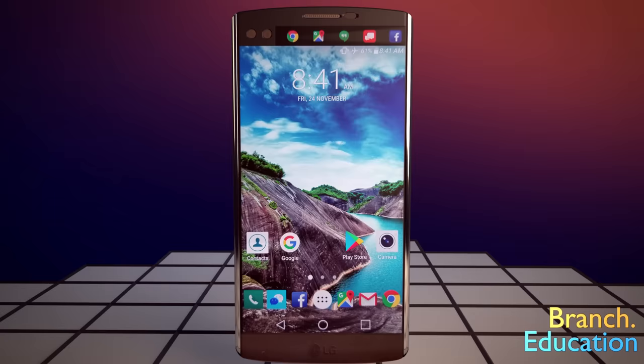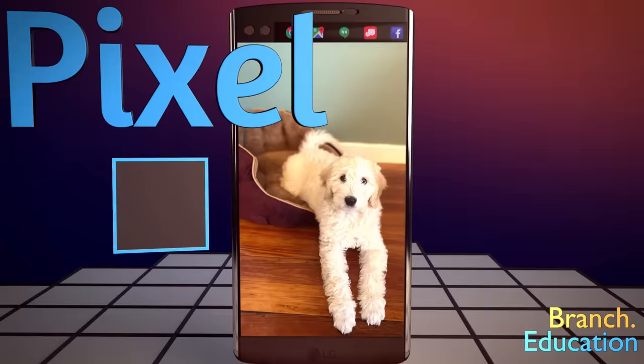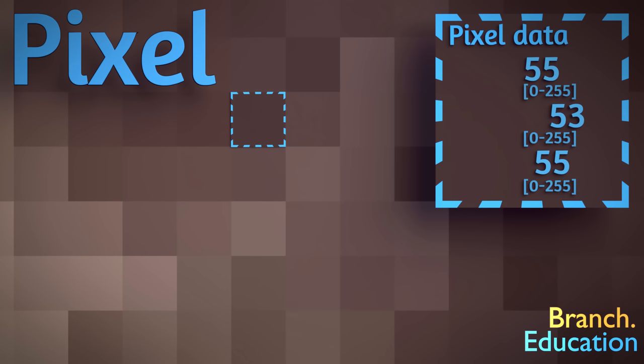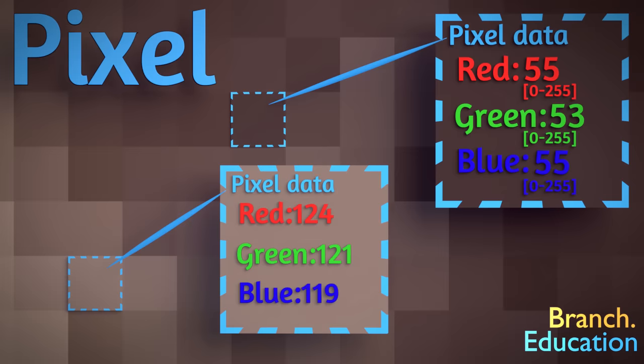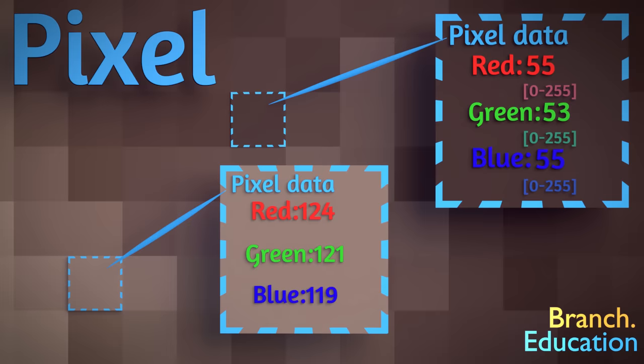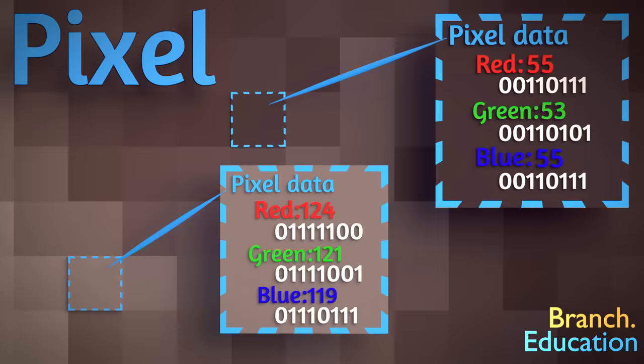First, this picture is made up of pixels. And each pixel has a color. So, let's zoom in so that we can see the individual pixels. The color of every pixel is defined by a combination of three numbers, ranging from 0 to 255, each representing red, green, or blue. For example, the numbers would be 55, 53, 55 for this pixel's color right here, and then 124, 121, and 119 for this pixel.